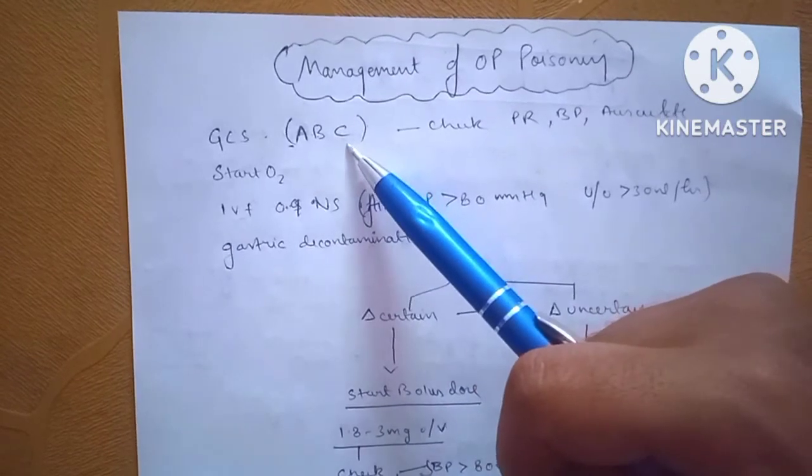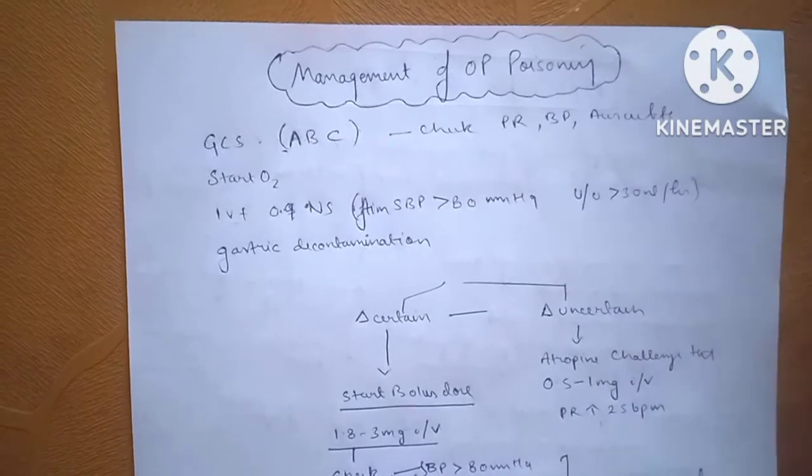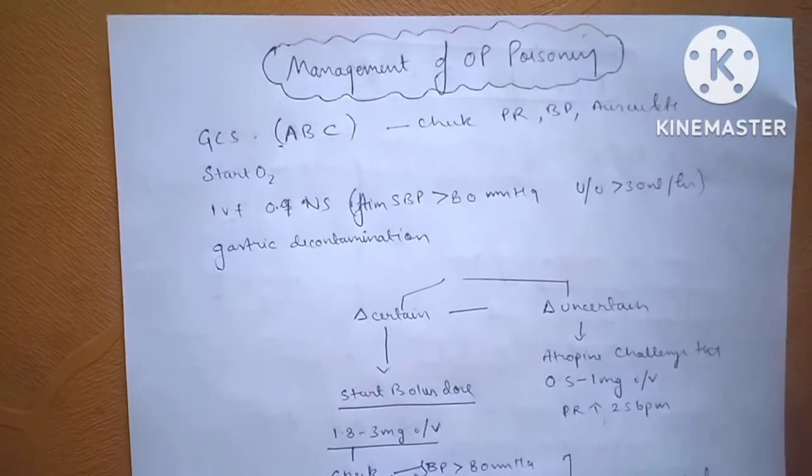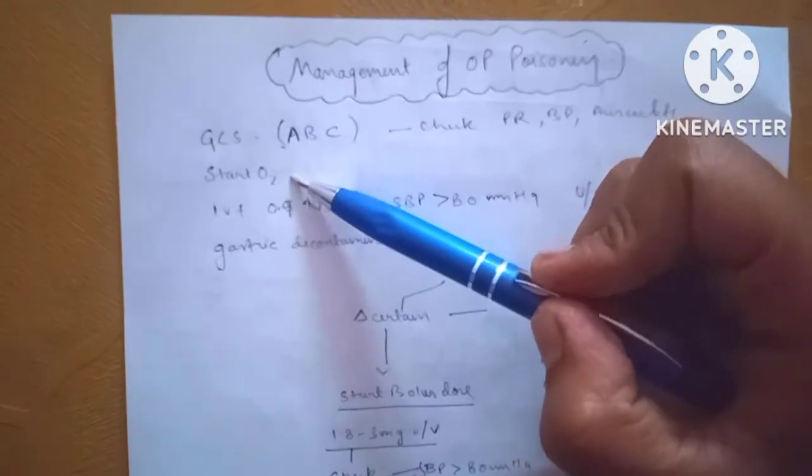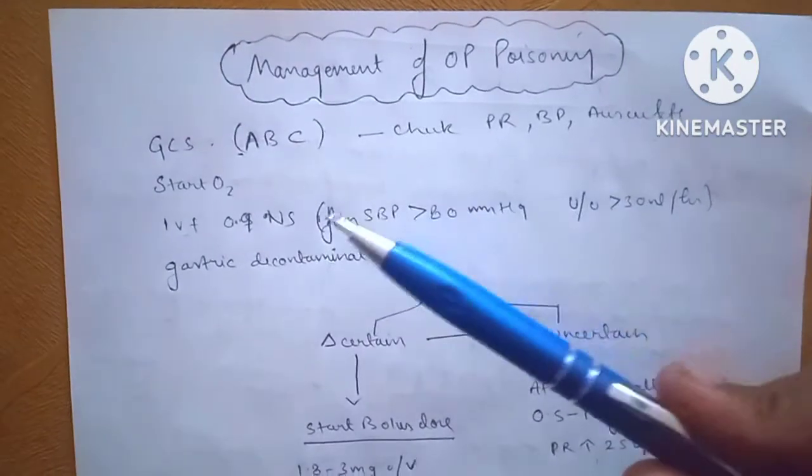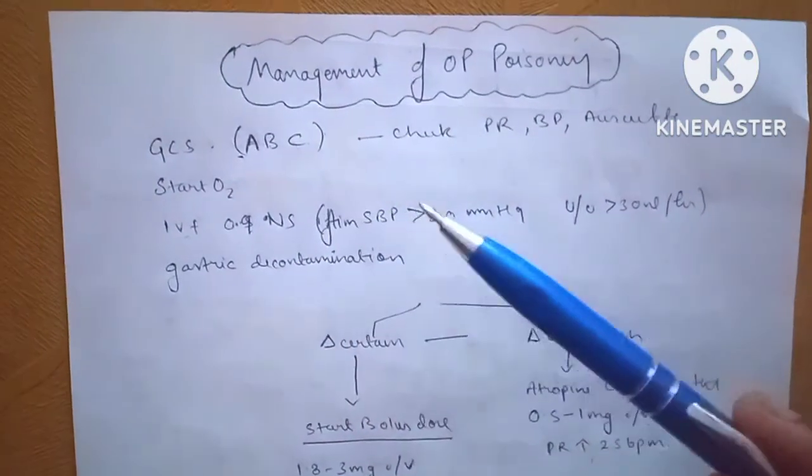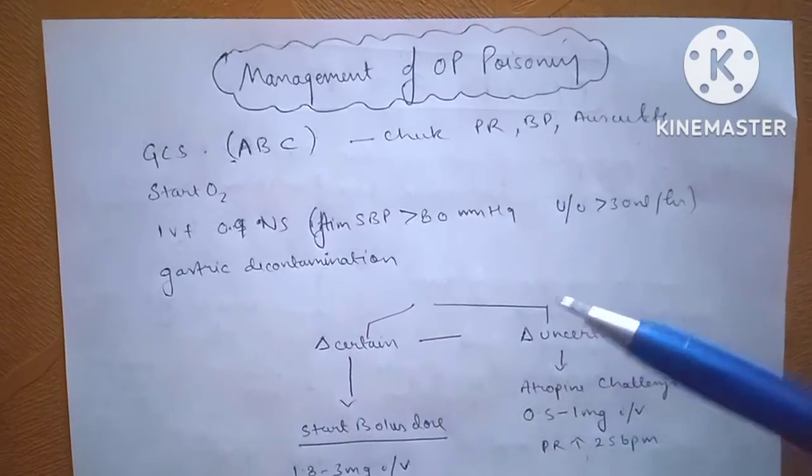Circulation: look for the pulse rate, blood pressure, and it will give an idea of the bradycardia and the fallen BP if any. Start oxygen if SpO2 is less than 90%. Intravenous fluid, that is 0.9% normal saline, is given with an aim of systolic BP of more than 80 mmHg and a heart rate of more than 80 BPM and urine output of more than 30 ml per hour.